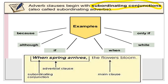For example, in the sentence 'When spring arrives, the flowers bloom' — 'the flowers bloom' is the independent clause. 'When spring arrives' is the dependent clause: 'when' is the subordinating conjunction, 'spring' is the subject, and 'arrives' is the verb. If you say 'when spring arrives' and remain silent, you feel the sentence needs completion — that's why we call it a dependent clause. This type of dependent clause is adverbial and talks about time, so it is an adverbial clause of time.